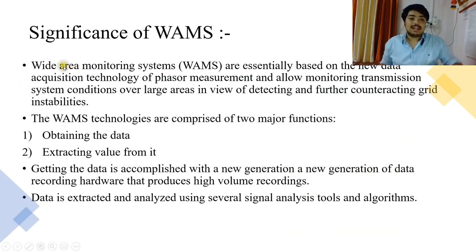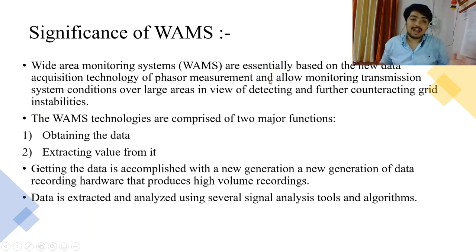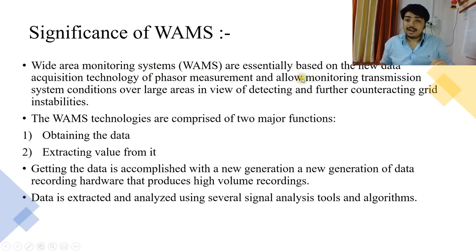Wide Area Monitoring Systems are essentially based on new data acquisition technology of phasor measurement, and allow monitoring of transmission system conditions over large areas to detect and counteract grid instabilities. This is basically a new type of data acquisition system — an upgrade to the earlier SCADA systems. It uses a phasor measurement technique, which I'll explain in a further slide. It also allows transmission monitoring, so if there's any instability in the transmission, you can monitor it and apply solutions to stabilize the problem.